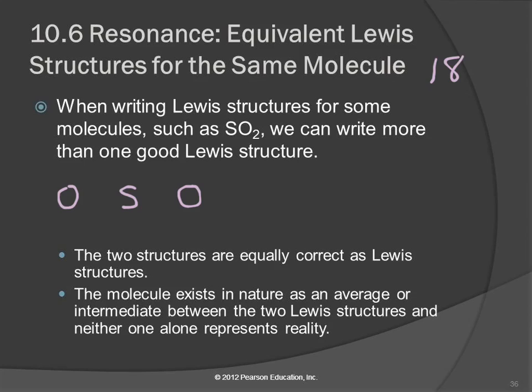So let's start distributing. We need to have a bond between each atom, and then we'll fill in lone pairs. Counting out our electrons: 2, 4, 6, 8, 10, 12, 14, 16, 18.